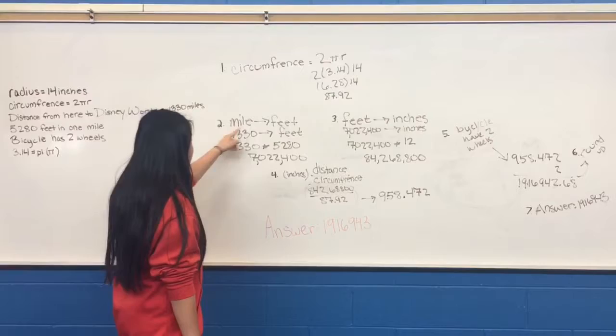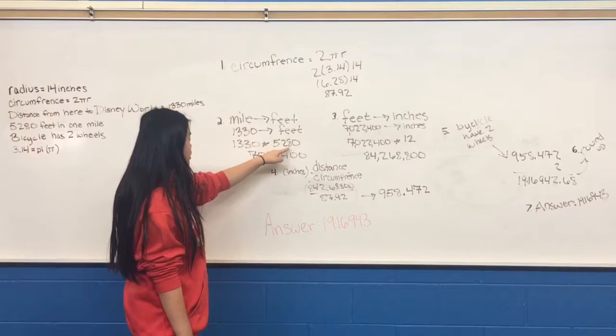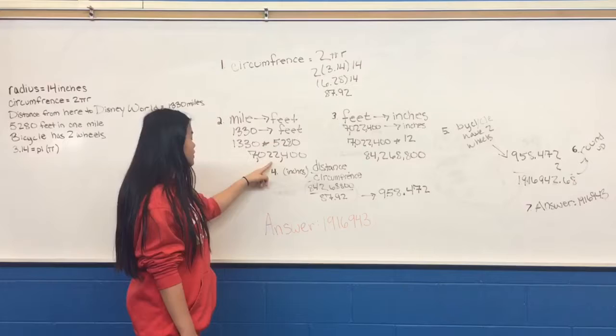Since that's in inches, you have to convert miles to feet and then miles to inches. So first we did 1,330 times 5,280, because there's 5,280 feet in a mile. In the end, you get 7,022,400.